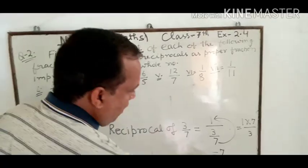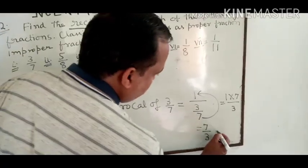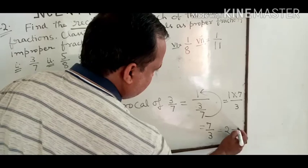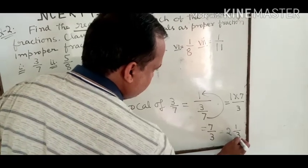Now we convert 7/3 into a mixed fraction: that gives 2 whole 1 upon 3. This is your answer for part one.